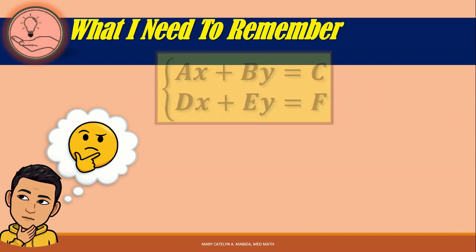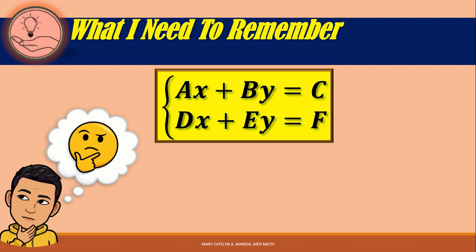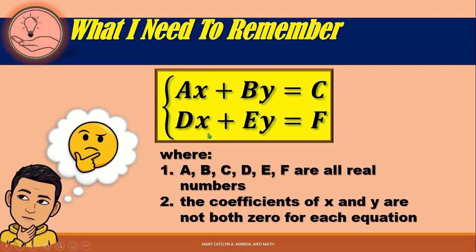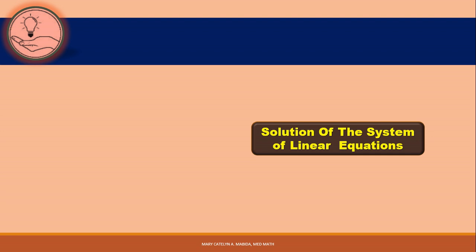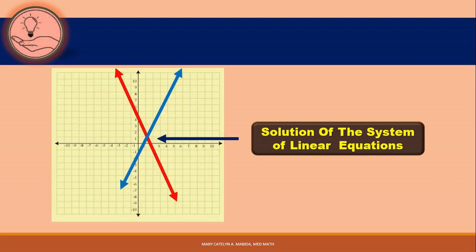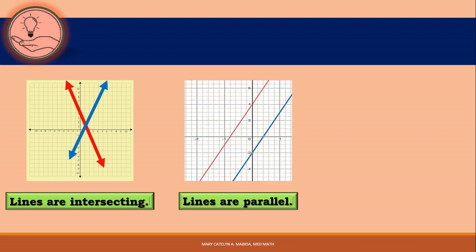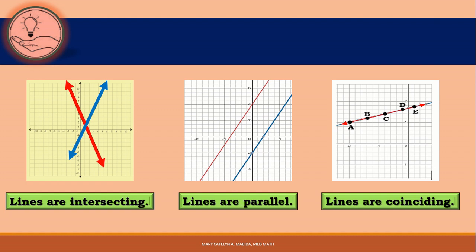And don't forget: a system of linear equations is a set or collection of linear equations, all of which must be satisfied, written as Ax + By = C and Dx + Ey = F where A, B, C, D, E, and F are real numbers and the coefficients of x and y are not equal to zero. The solution is the point of intersection — an ordered pair satisfying both equations. A system has only one solution if graphs intersect at one point, no solution if they do not intersect, and infinitely many solutions if they coincide.